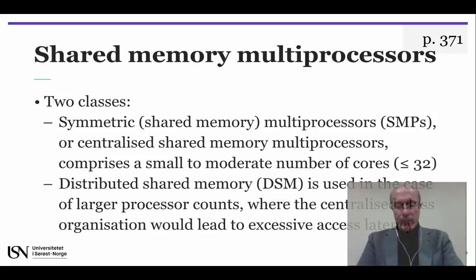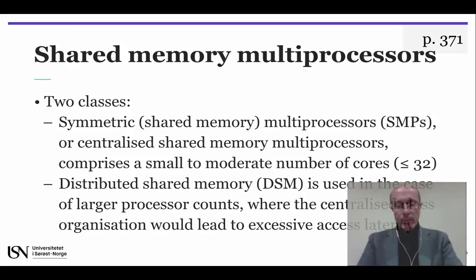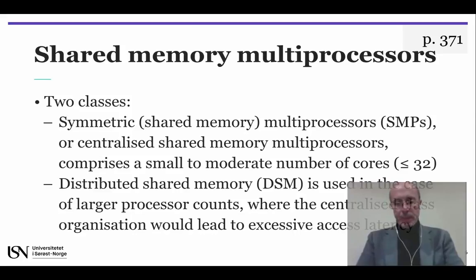Shared memory multiprocessors comprise two classes. The centralized shared memory group is only possible when the number of processors is relatively small. In this class, all processors have equal access to the shared memory, and therefore it is also called symmetric shared memory multiprocessors. This approach would lead to excessively long access latency with larger processor numbers, so in that case a distributed shared memory scheme is used instead.